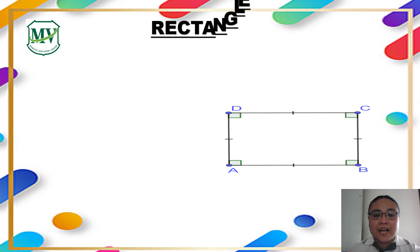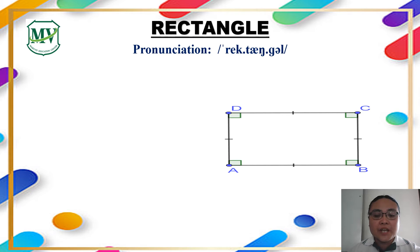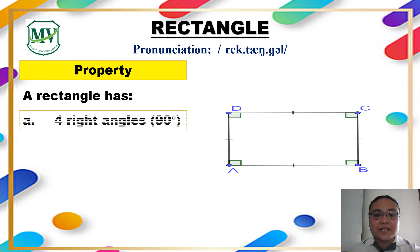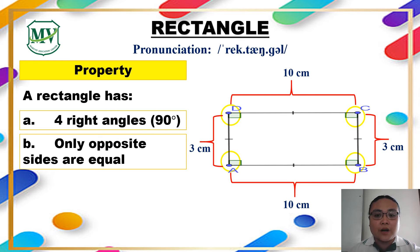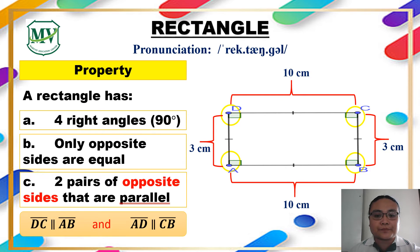The next type of quadrilateral is rectangle. What are the properties of a rectangle? A rectangle has four right angles, same as a square. The opposite sides of a rectangle are equal in length. A rectangle has two pairs of opposite sides that are parallel. Line segment DC is parallel to line segment AB, and line segment AD is parallel to line segment CD.